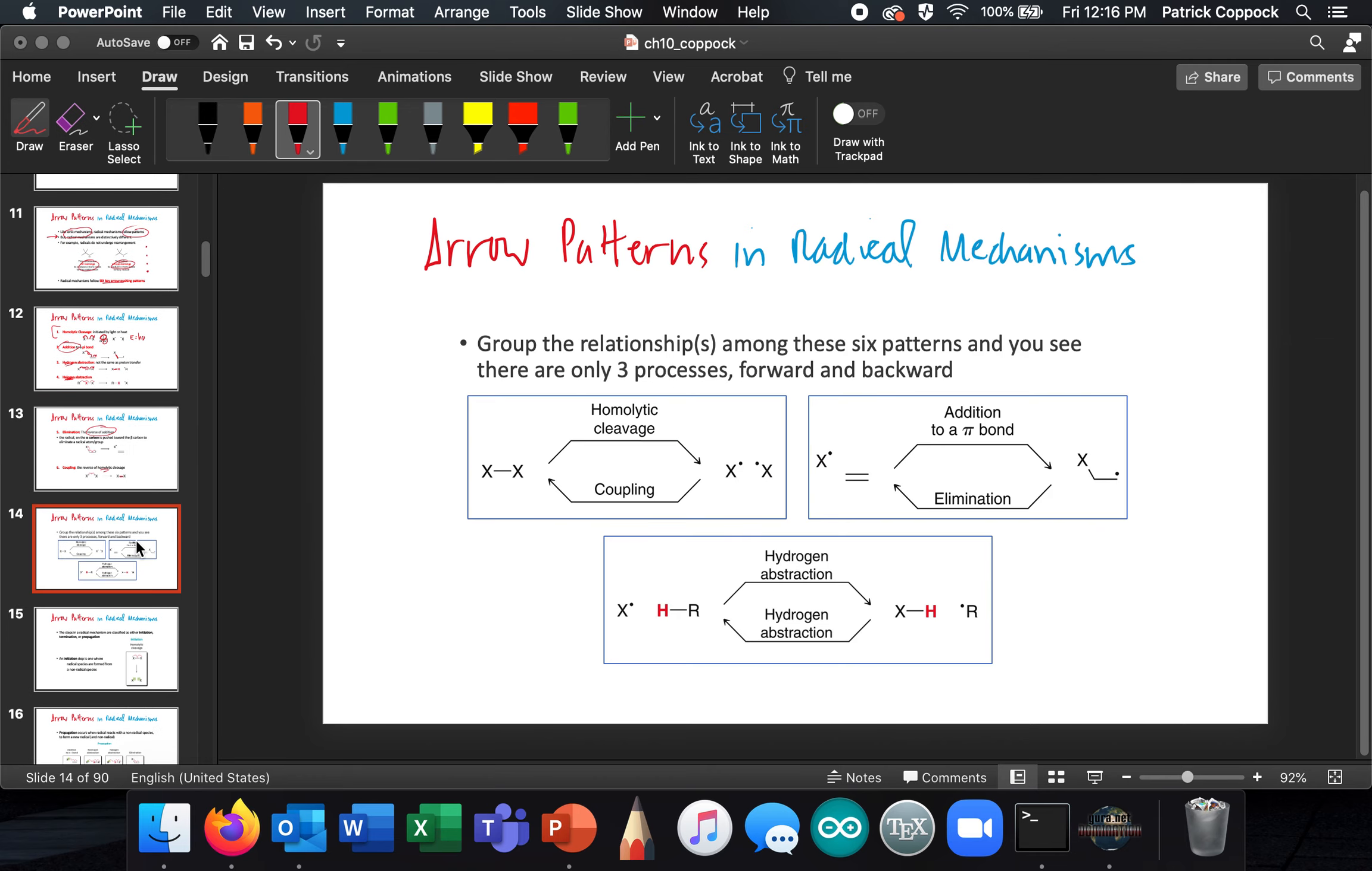So in general, we can see that these are three things which are the opposite of each other. We have hydrogen abstraction which goes either way. We have addition to a pi bond. We have elimination from a pi bond. We have coupling, and we have homolytic cleavage. So these are the relationships that we have.